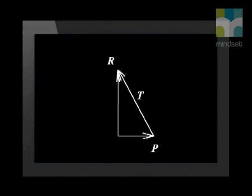See how we place the tail of vector T at the head of vector P. If those two vectors act, their combined action is the same as the action of vector R. That's why R is called the resultant.